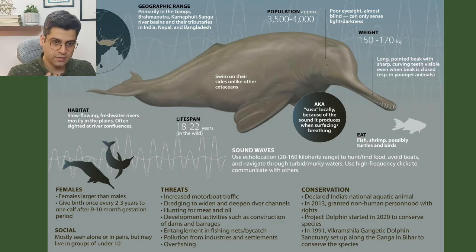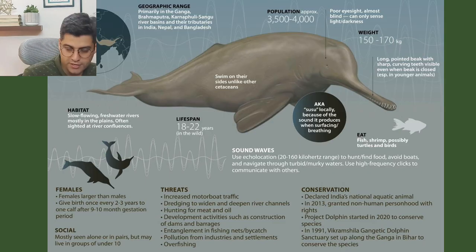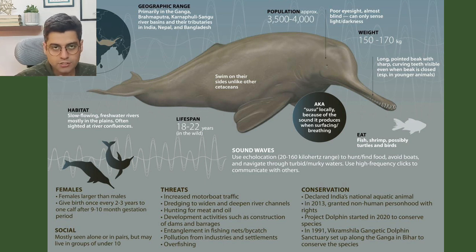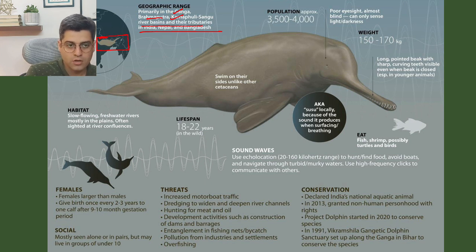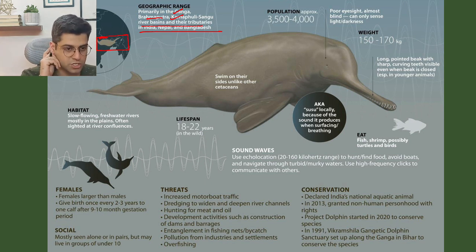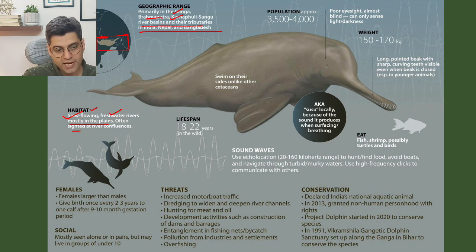Going into more detail: it is primarily found in the Ganga, Brahmaputra, Karnafuli and Sangu river basins and their tributaries in India, Nepal and Bangladesh. Habitat: slow-flowing freshwater rivers, mostly in the plains, often sited at river confluences.